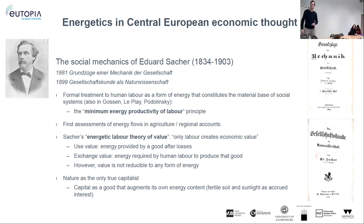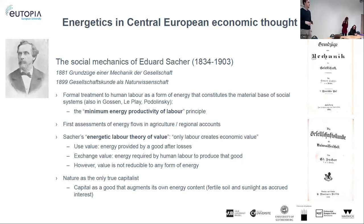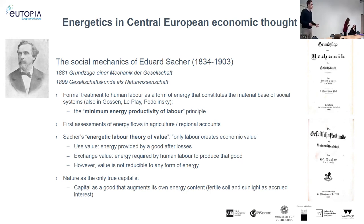So, Edward Zaha. His first book, 'Social Mechanics,' is from 1881 — one of the first to develop a full treatise of political economy in this framework. Part of my selection process was identifying figures who actually built thorough frameworks of economic theory. Their books have chapters on capital, labor, currency, money, rents, profits, and production functions — they were writing as political economists, but with one foot in the natural sciences and thermodynamics.